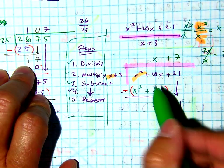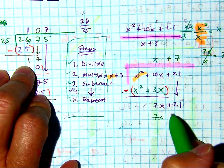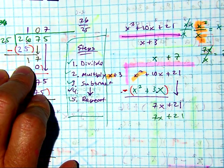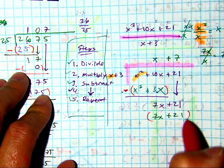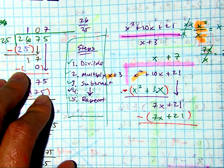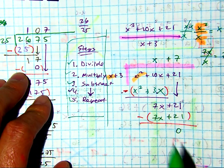7 times x is 7x. And 7 times 3 is 21. Now we multiply. Now we're going to subtract. 7 minus 7 is 0. 21 minus 21 is 0. So we have a remainder of 0.